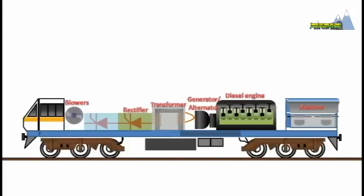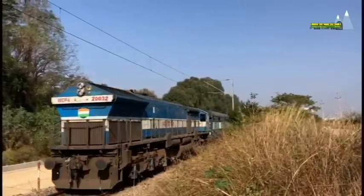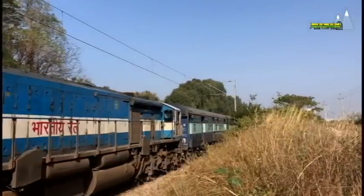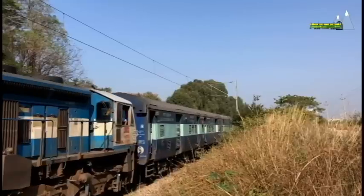The direct current is converted by an inverter to three-phase alternating current, which then powers the traction motors. The diesel engine is cooled by a radiator and the heat produced by the transformers, rectifiers and inverters is dissipated with blowers.